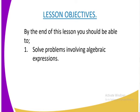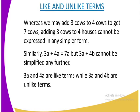Let us first look at like and unlike terms. Whereas we may add three cows to four cows to get seven cows, adding three cows to four houses cannot be expressed in any simpler form. Remember here, three cows to four cows, they are all cows so we can add them, but three cows to four houses cannot be expressed because these are two different terms, so this is what we are calling unlike terms.